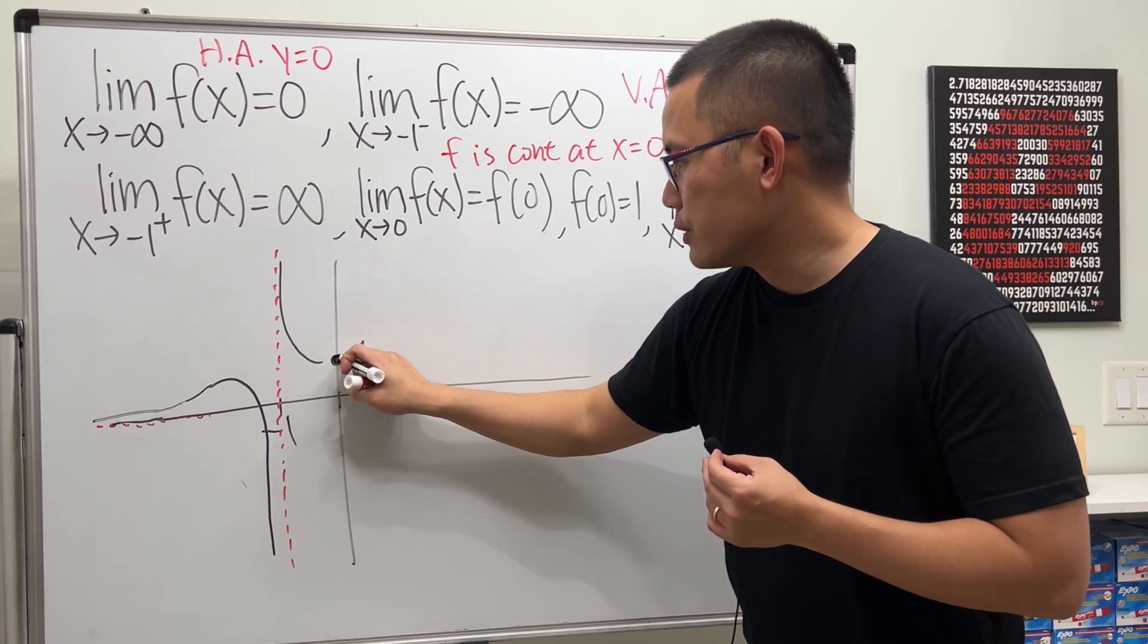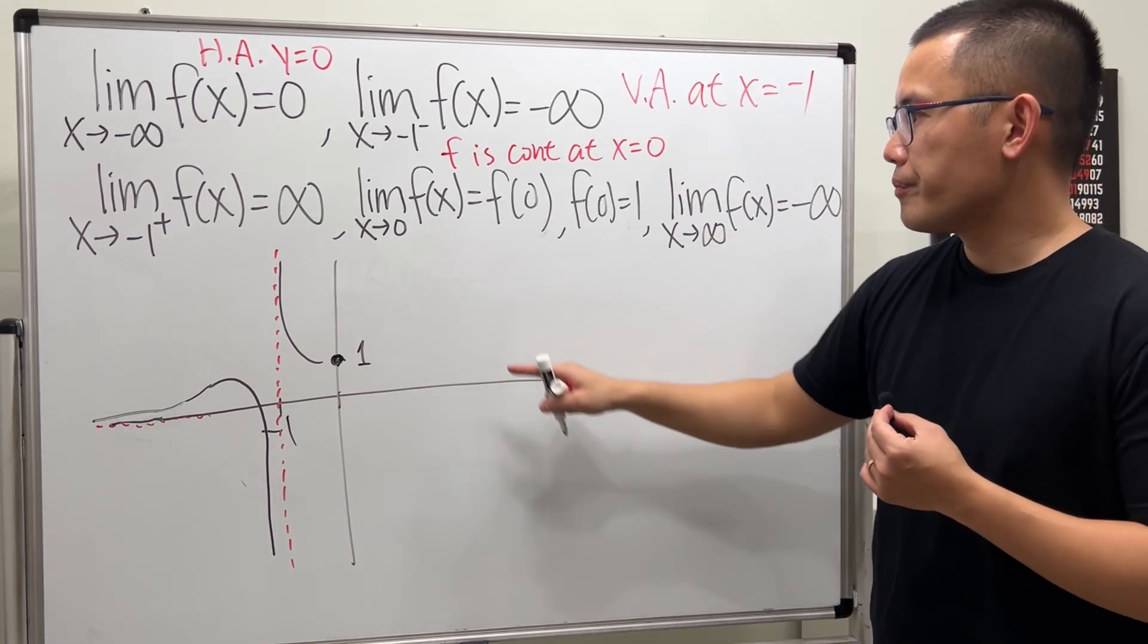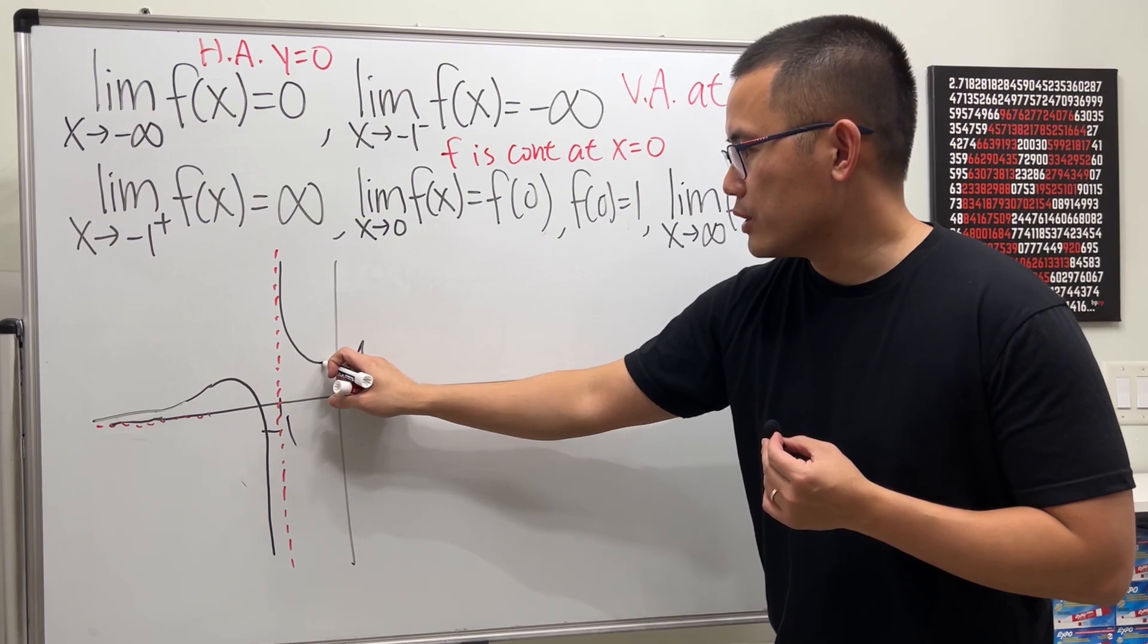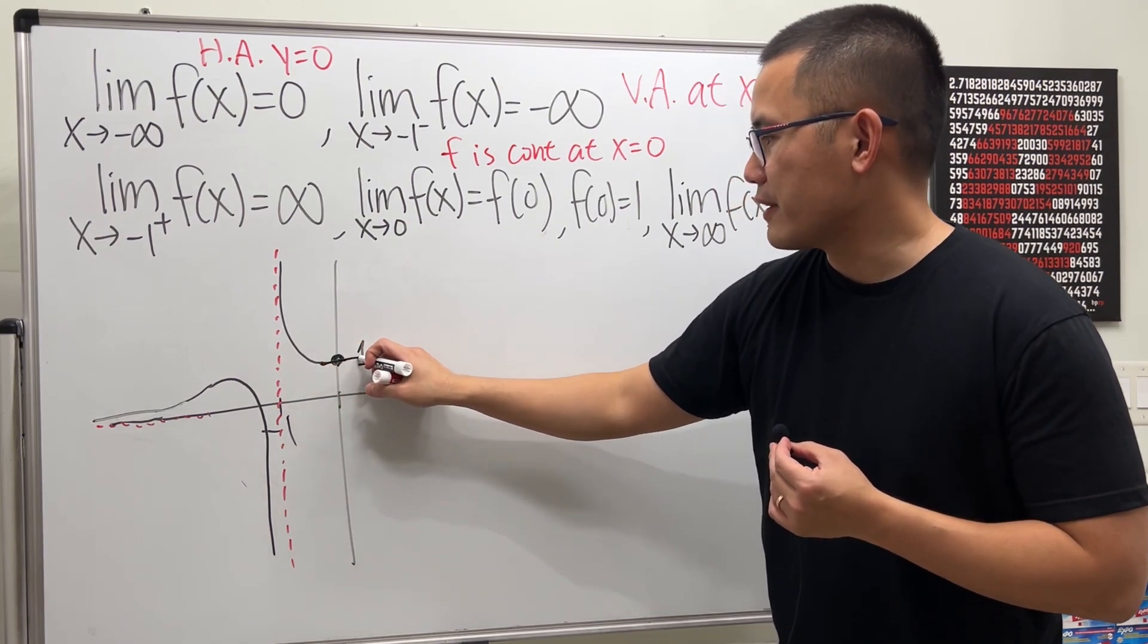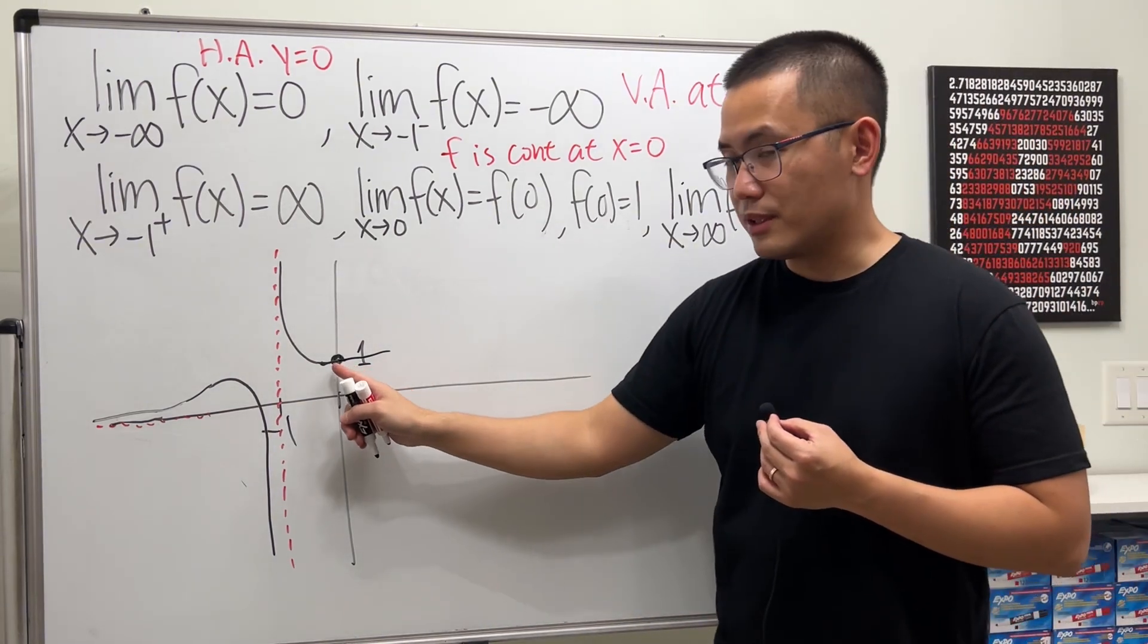So we have a closed circle. And also, the function must be continuous. So we can just go a little bit left, a little bit right, something like that. The function is continuous right here.